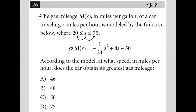The question goes on to say, according to the model, at what speed — so we know speed is S, so S equals question mark — in miles per hour, does the car obtain its greatest gas mileage? We know M of S is gas mileage, so we want the greatest, the largest gas mileage.